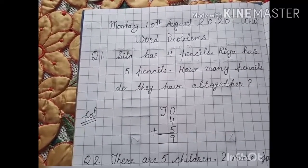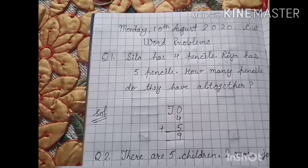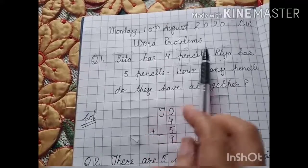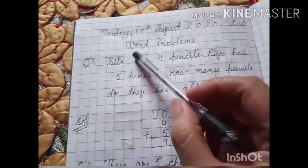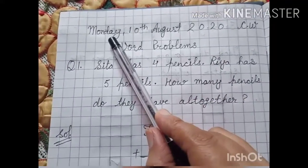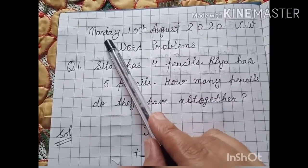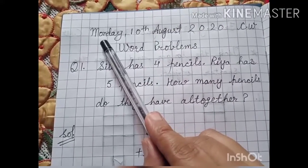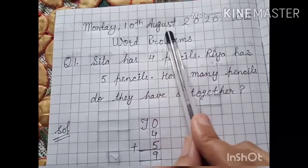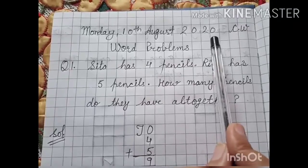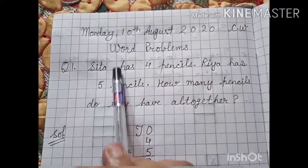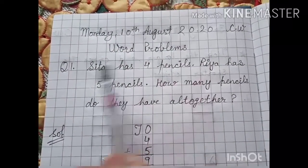Good morning dear students. Today we will revise word problems. First of all you will put the date. What is the date today? Monday 10th August 2020 CW. Then write down word problem.